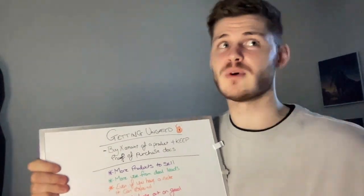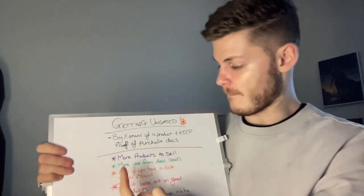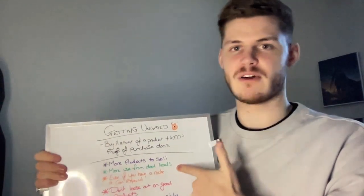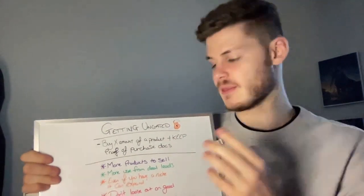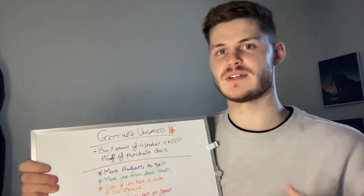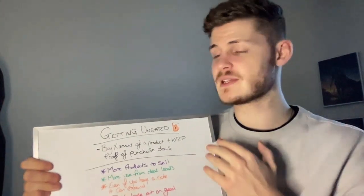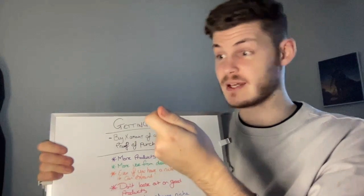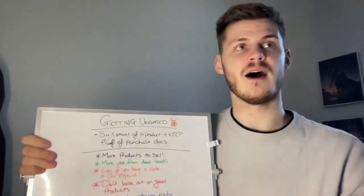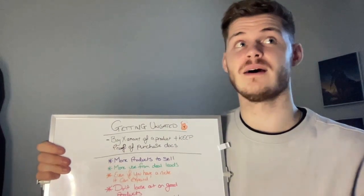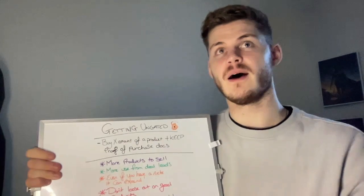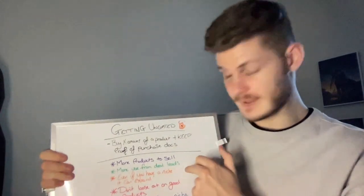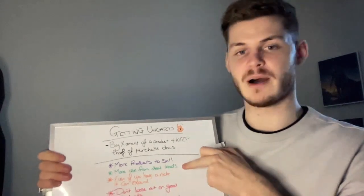It's a no-brainer — you're ungated in more categories, so there are more products available. More use from deal leads too. If you're part of an Amazon seller group and you've received deal leads however many times a week or month, being gated in a bunch of categories means you won't be able to use every single deal lead. Even if you're using a deal sheet service like Online Arbitrage Deals or Sellability to help you source, being gated really limits the sorts of products you can go ahead with. If most of the leads in a given week come from a category you're gated in, that's a lot of products you're missing out on.